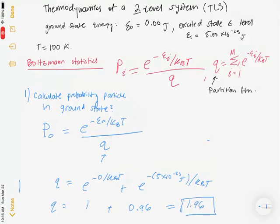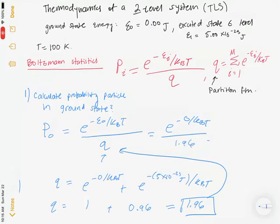Plugging into the equation to find the probability in the ground state: e^(−0/k_BT) over 1.96 gives 1 over 1.96, which is equal to approximately 0.51.